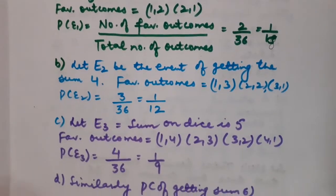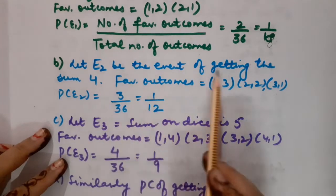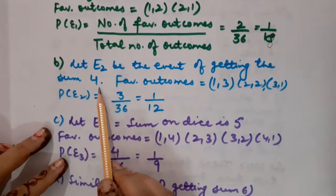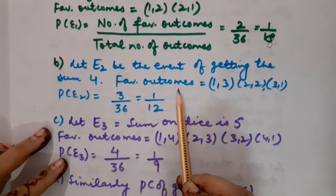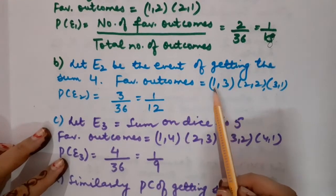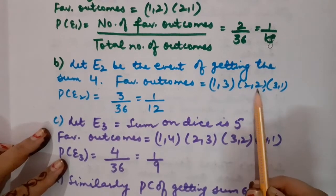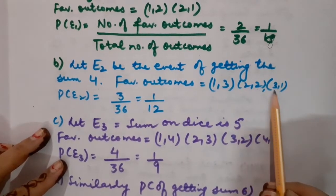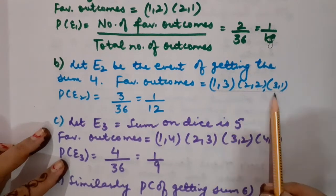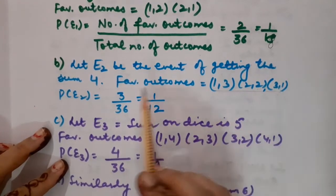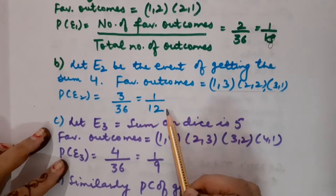Let E2 be the event of getting the sum as 4. The favorable outcomes are (1,3), (2,2), and (3,1) — each giving a sum of 4. There are 3 favorable outcomes. So the probability is 3/36, which equals 1/12.